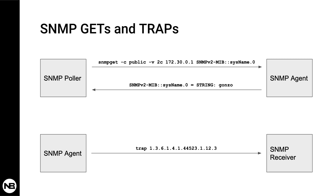In this slide, you can see the interaction between an SNMP server (or poller) and an SNMP agent. Here the server is asking for the hostname of a specific device. You can see the SNMP-GET query with the version number, the device IP address, and the actual OID or resource the server is requesting. The agent, or monitored device, then sends back a string containing its hostname.